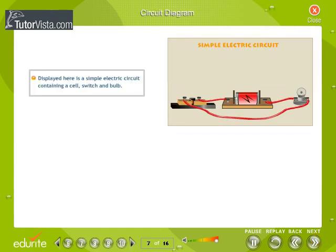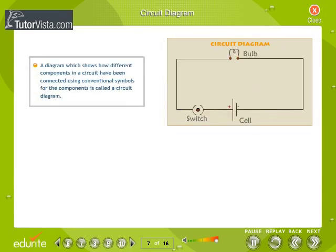Circuit diagram: Displayed here is a simple electric circuit containing a cell, switch, and bulb. It is tedious to reproduce such electric circuits. To save time and to avoid confusion, electric components like cell, switch, and bulb are generally represented with standard symbols. A diagram which shows how different components in a circuit have been connected using conventional symbols for the components is called a circuit diagram.